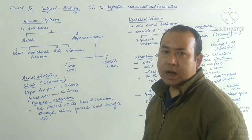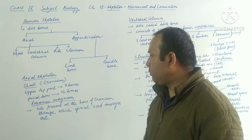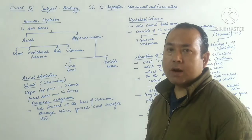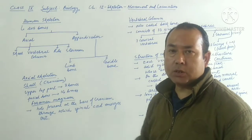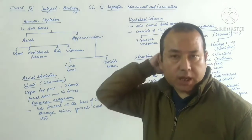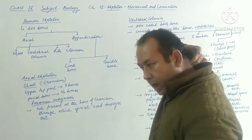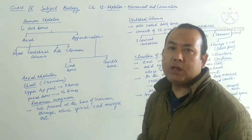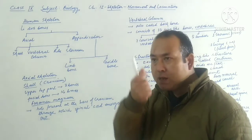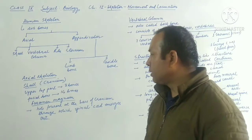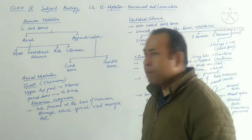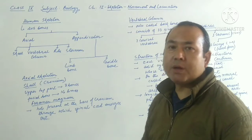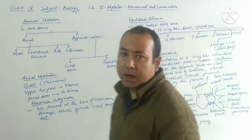An important term to keep in mind here is foramen magnum. Foramen magnum is the hole present at the base of the skull — at the back side of the head region. Through this hole, the spinal cord usually emerges out from the brain. That hole is called the foramen magnum: the hole present at the base of the cranium through which the spinal cord emerges out.